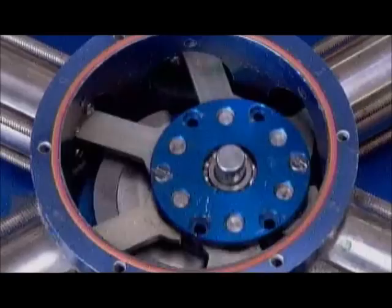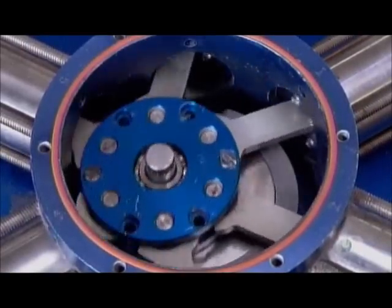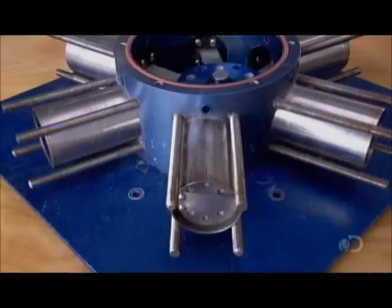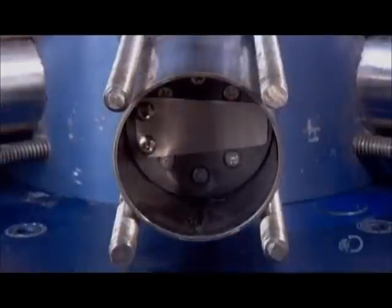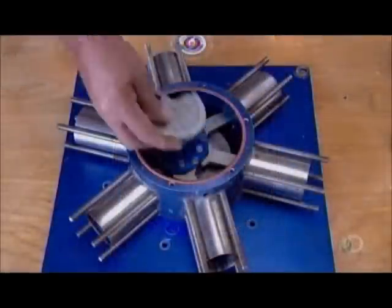Unlike a traditional car engine, with cylinders arranged in line, these cylinders are in a radial configuration and therefore equidistant from the center. This prevents the engine from warping under high temperatures.